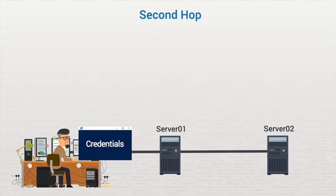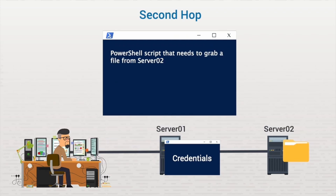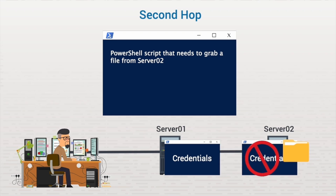For example, if you open a remote PowerShell session with a remote server and execute a script, but that script needs to pull a resource from a second server, Kerberos will not implicitly pass your administrative privileges over that second hop. This means you can't access or pull resources from the second server. This is known as the Kerberos second hop problem. Thankfully, Microsoft has given us a few ways to work around it.